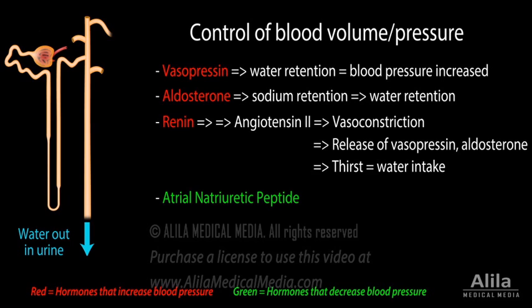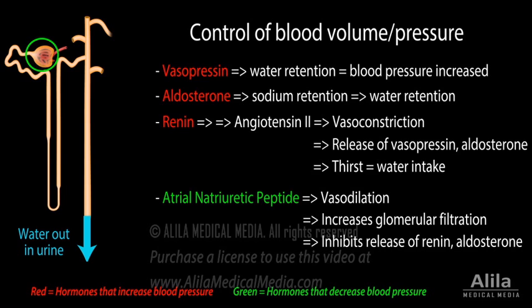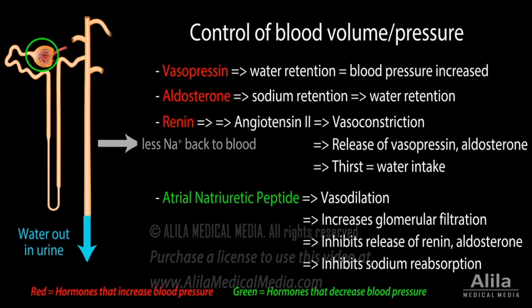Atrial natriuretic peptide, ANP, is secreted by the atrial myocardium of the heart in response to high blood pressure. ANP reduces blood pressure in a number of ways: it directly dilates blood vessels, it increases glomerular filtration rate, thereby removing more fluid in urine. ANP inhibits the secretion of renin and subsequently aldosterone. ANP also inhibits sodium reabsorption by the collecting duct.